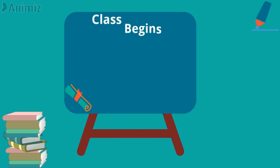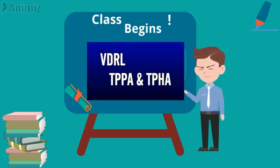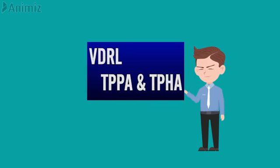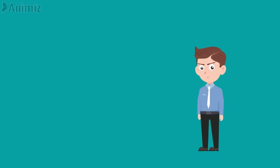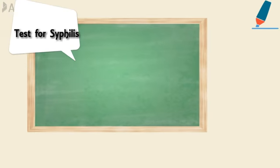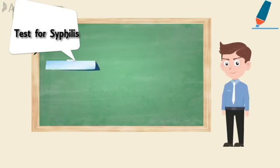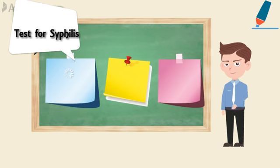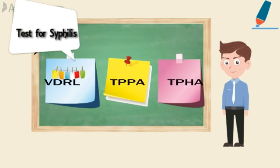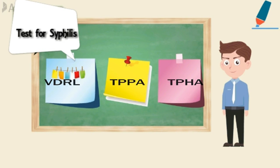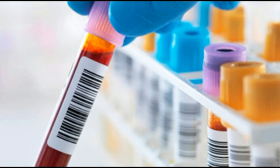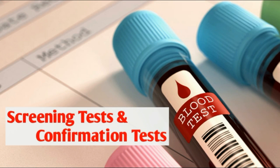In our Star Laboratory channel, several viewers are asking about the VDRL test, what is TPPA, what is TPHA, and what are the differences between VDRL and TPPA and TPHA — what are the instances we are using these tests for the detection of syphilis. This video is very much helpful for them to get a clear idea regarding these tests.